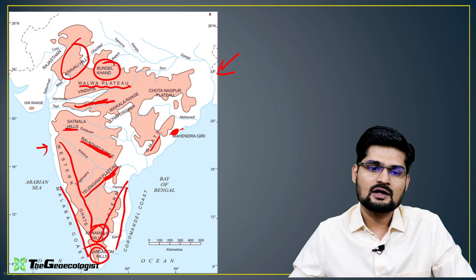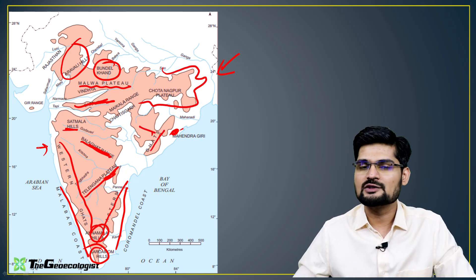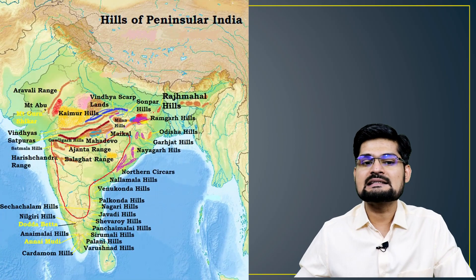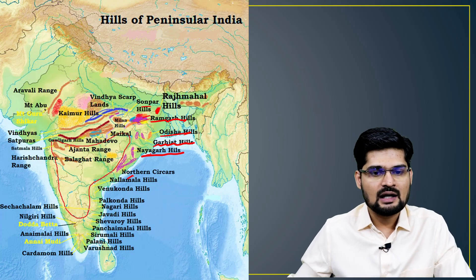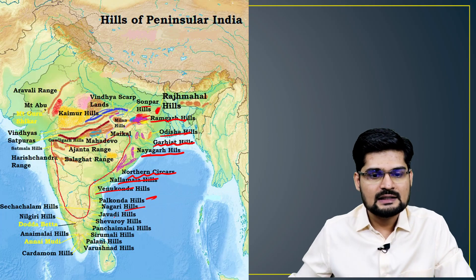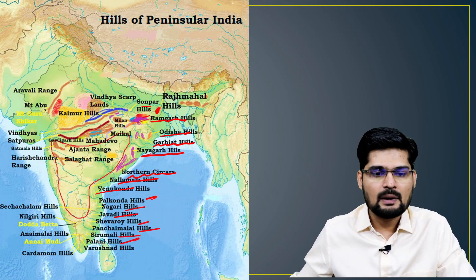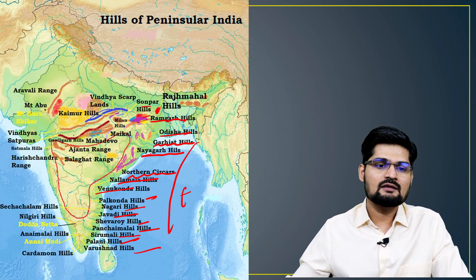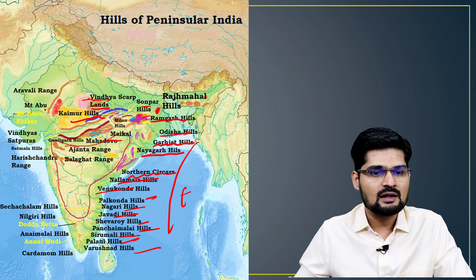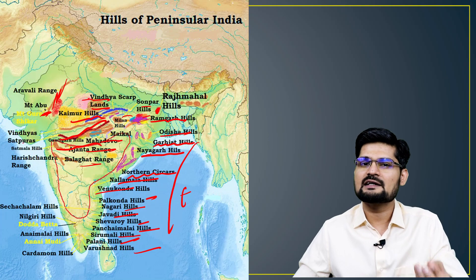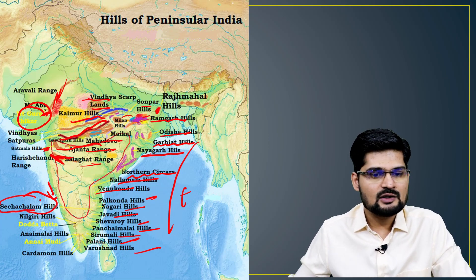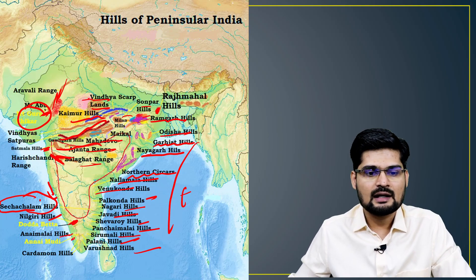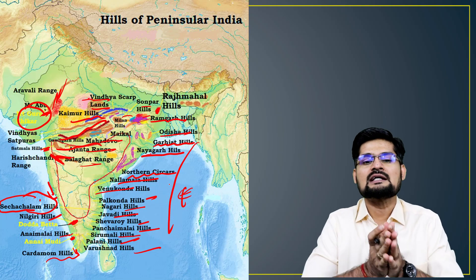The Eastern Ghats include the Mahendragiri range, extending to the Chota Nagpur Plateau. Detailed hill ranges include Rajmahal Hills, Sonapur, Ramgarh, Garjat Hills, Nagar Hills, Nallamala, Venu Konda, Palakonda, Nagari Hills, Javadi, Chevroi, Panchamalai, Sirumalai, Palani Hills, and Varushanad Hills in the east. Centrally, the Vindhyas, Kaimur Hills, Mahadev, Ajanta, and Balaghat ranges are notable. The Aravallis culminate at Guru Shikhar near Mount Abu, and the Nilgiris' highest peak is Doddabetta, while Anamudi is the highest peak in the Anamalai range.